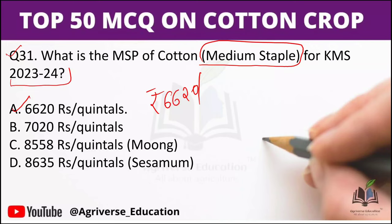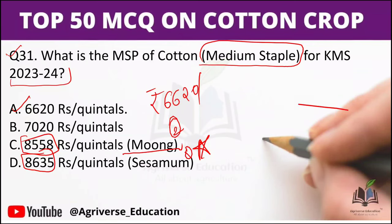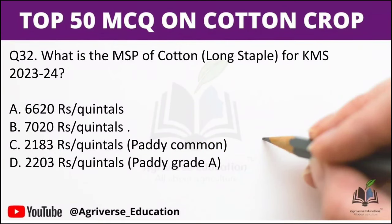For comparison: the highest MSP this season is 8635 rupees per quintal for sesame, and moong is second. For long staple cotton variety, the MSP decided is 7020 rupees per quintal. An extra fact: paddy MSP increased by 213 rupees per quintal this season.